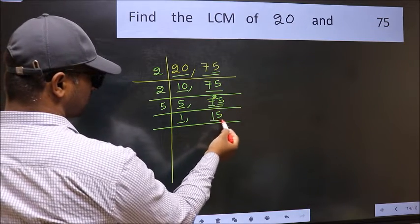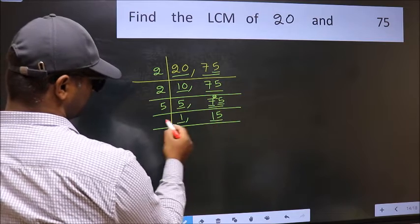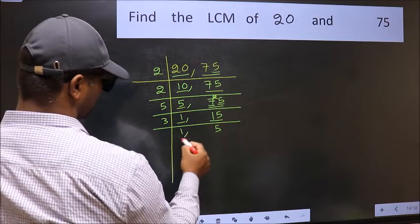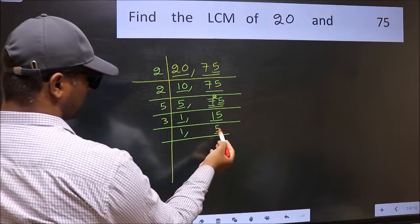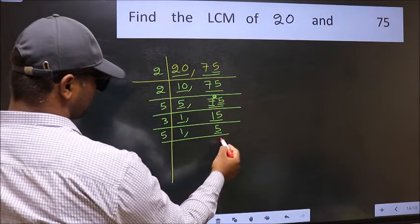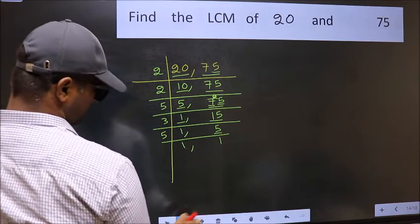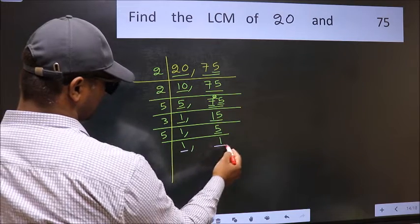So focus on the next number 15. 15 is 3 fives, 15. Now here we have 5. 5 is a prime number. So 5 once 5. So we got 1 in both places.